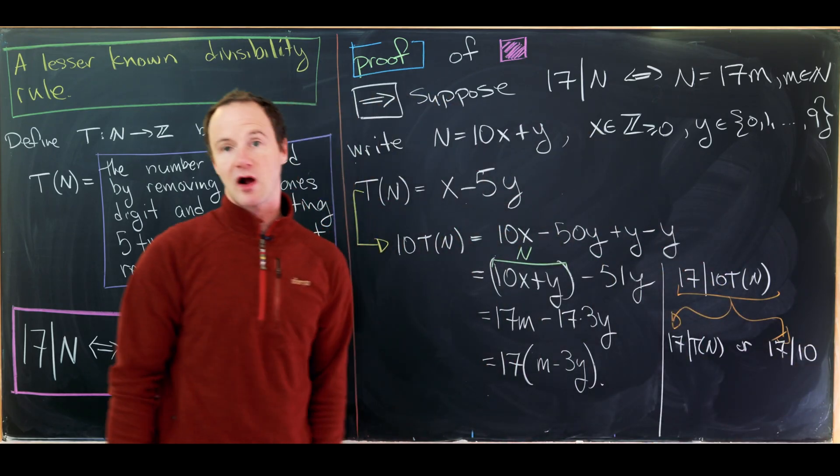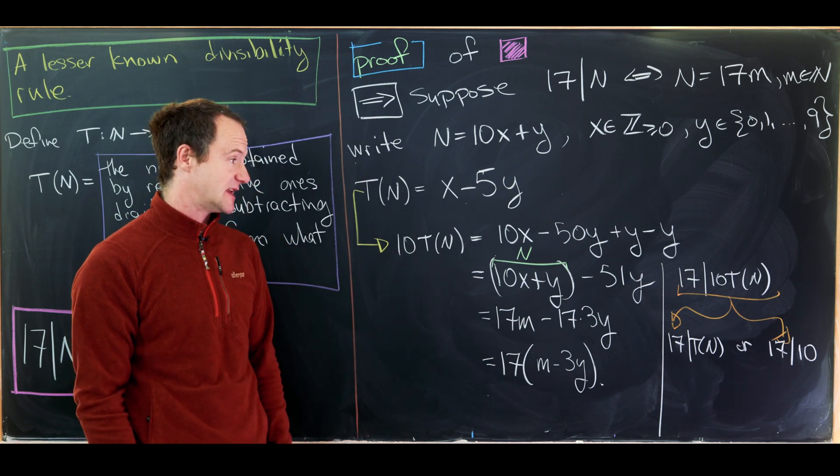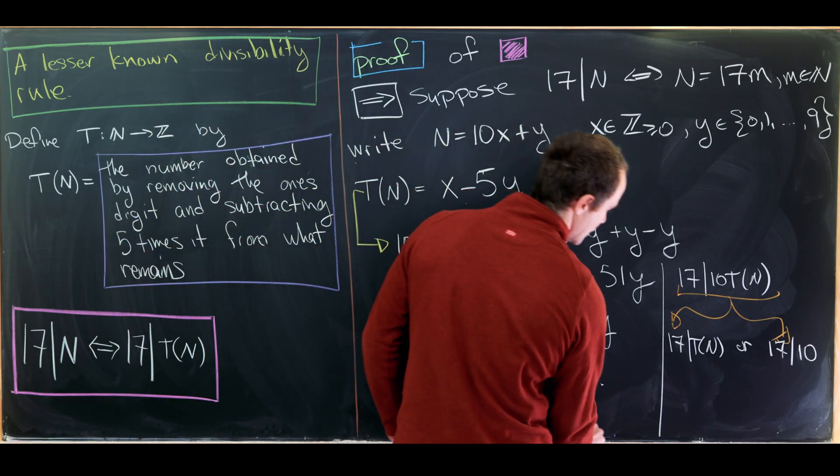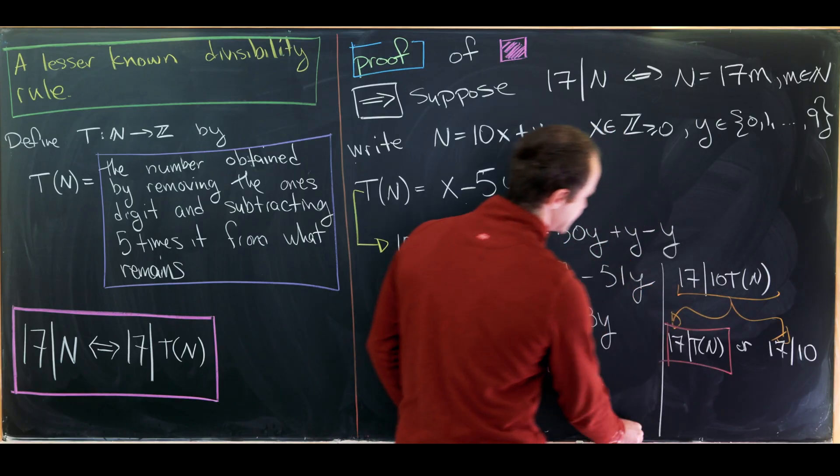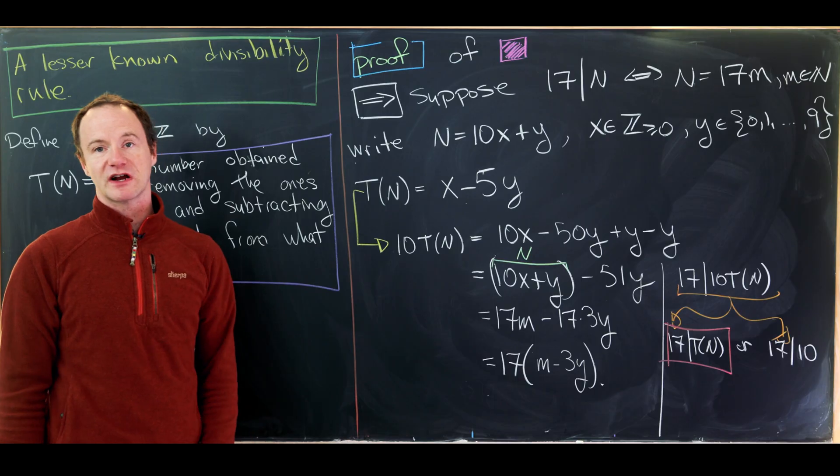Notice that 17 definitely does not divide 10. So that leaves us with the only possibility, which is 17 must divide T(n). So that gives us our forward direction.